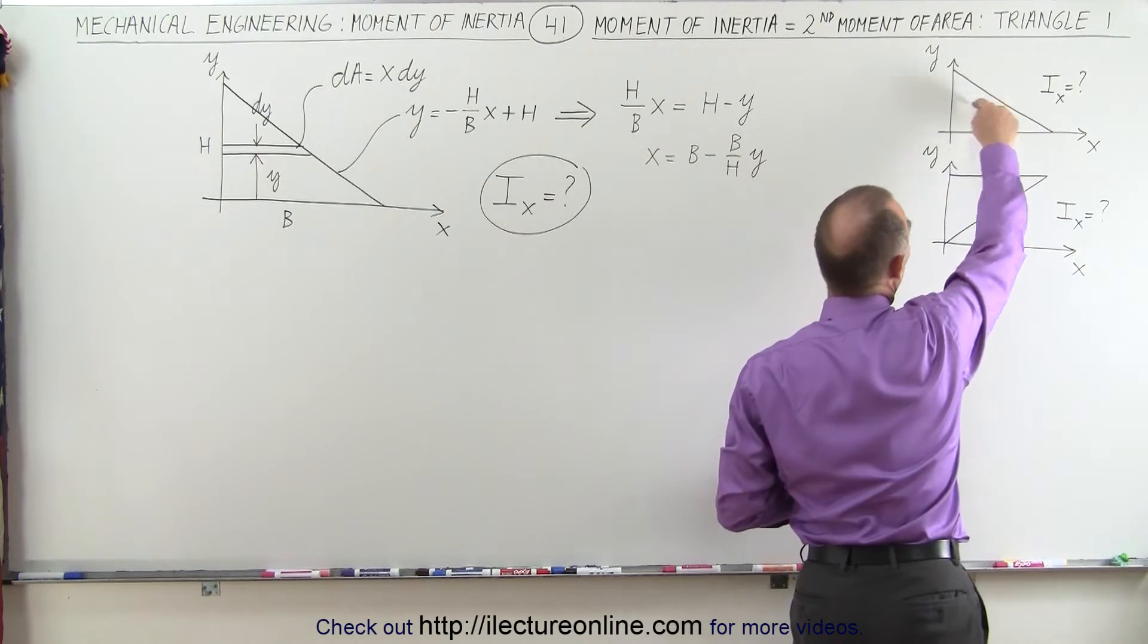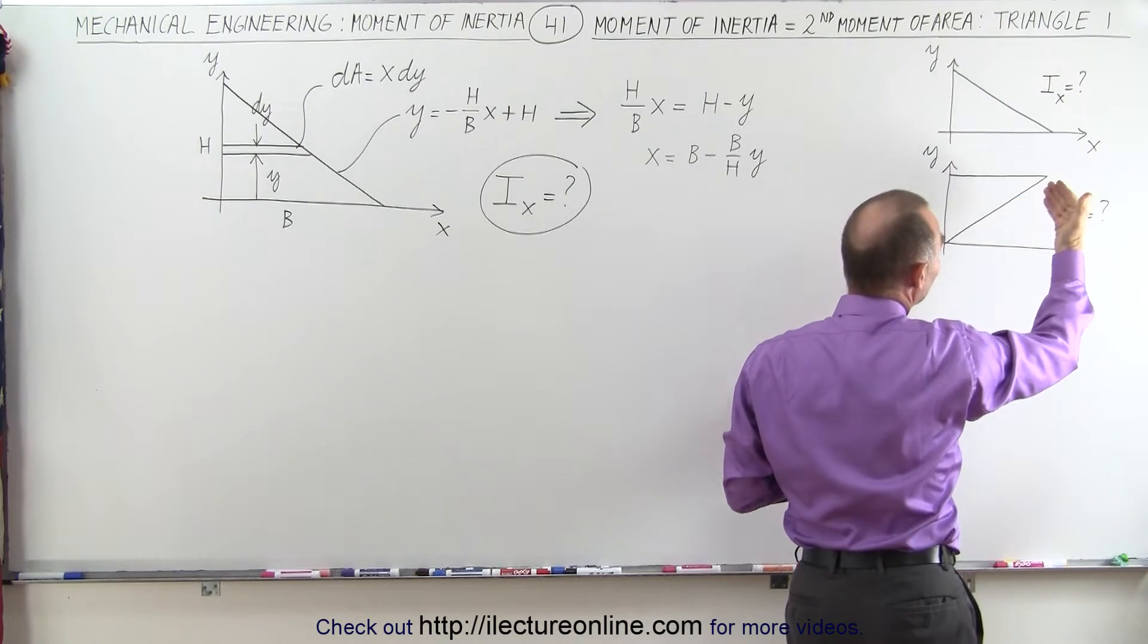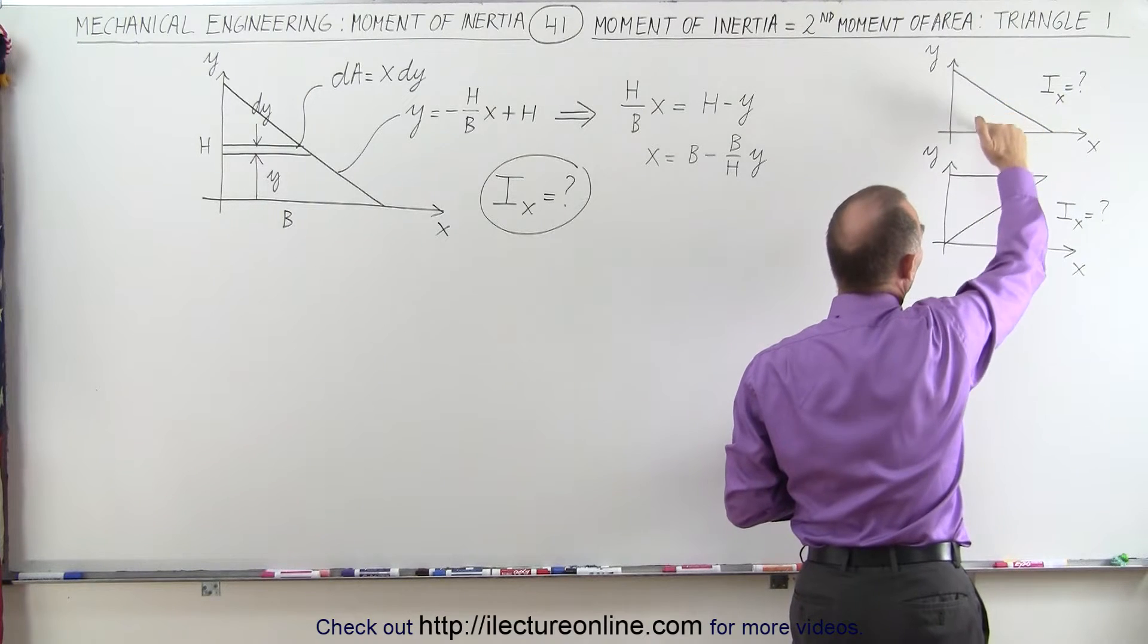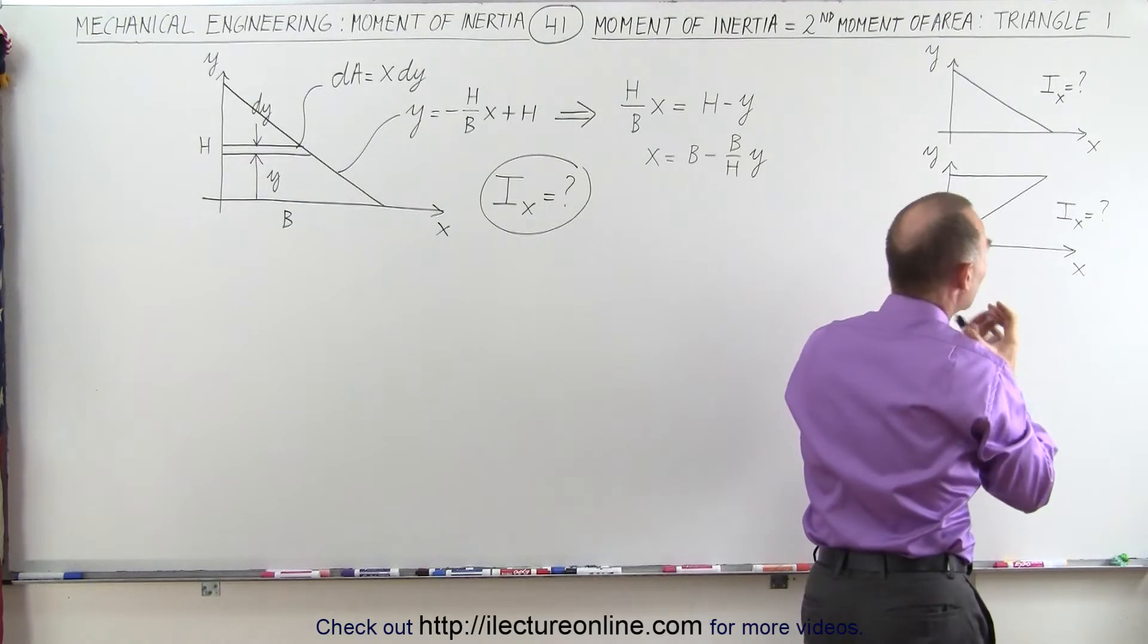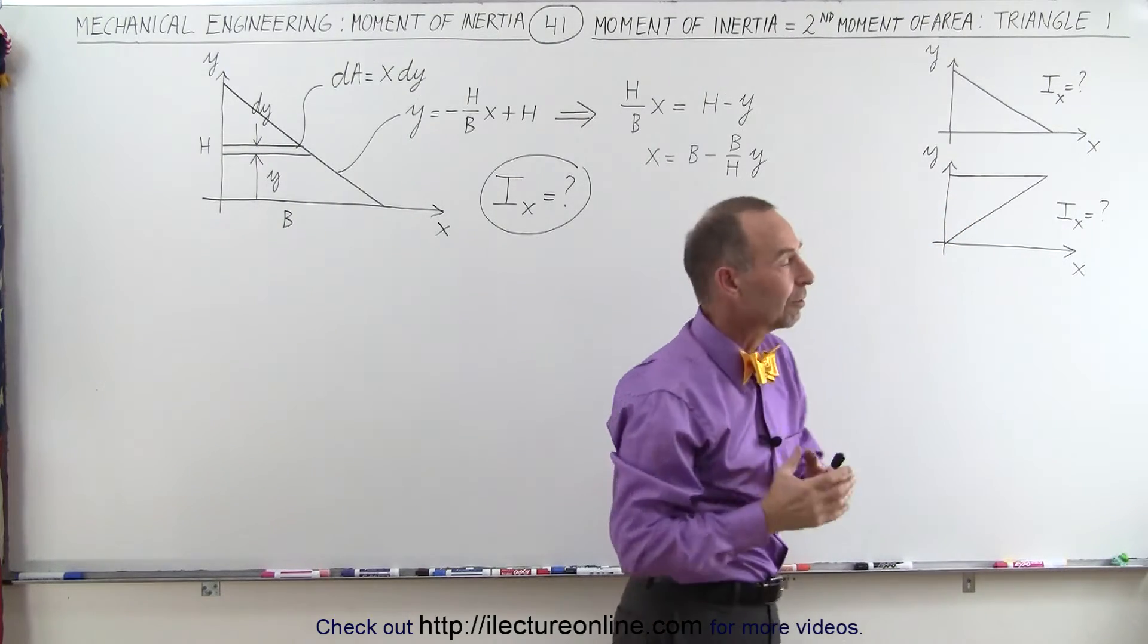Of course, we realize that most of the area, as it would be if we had an object with mass, most of the mass is close to the axis of rotation, so therefore we expect a smaller moment of inertia relative to the x-axis.